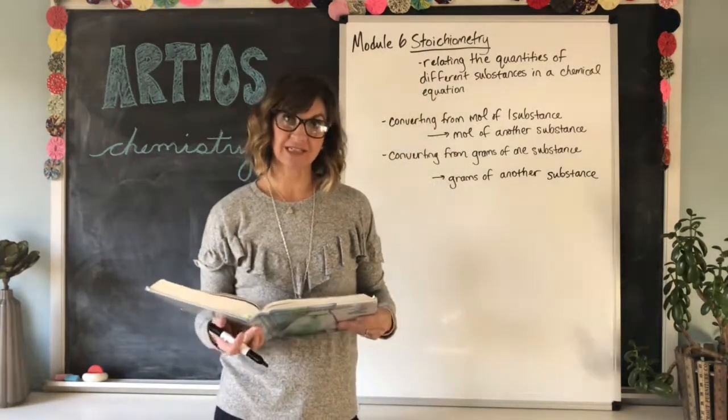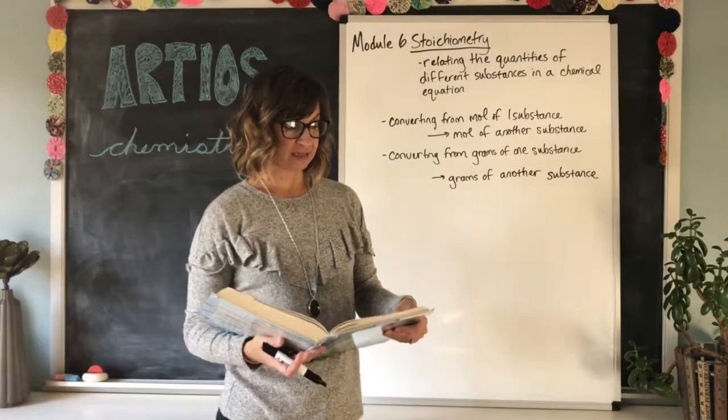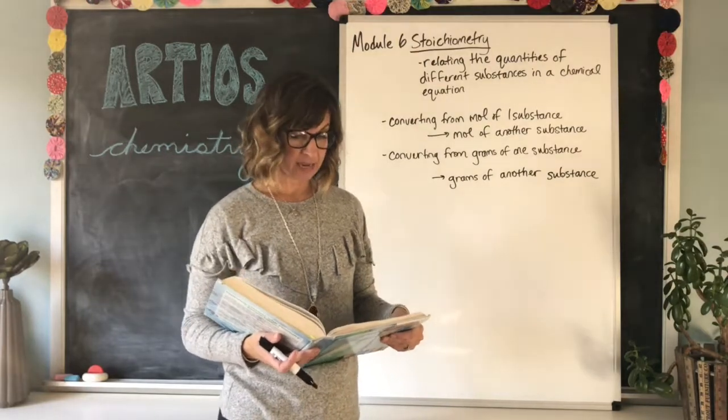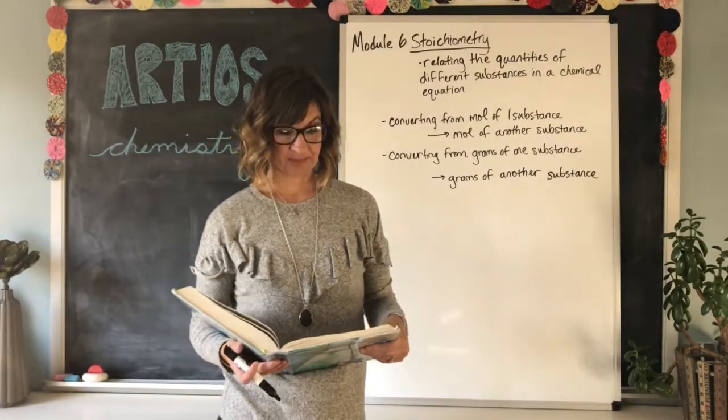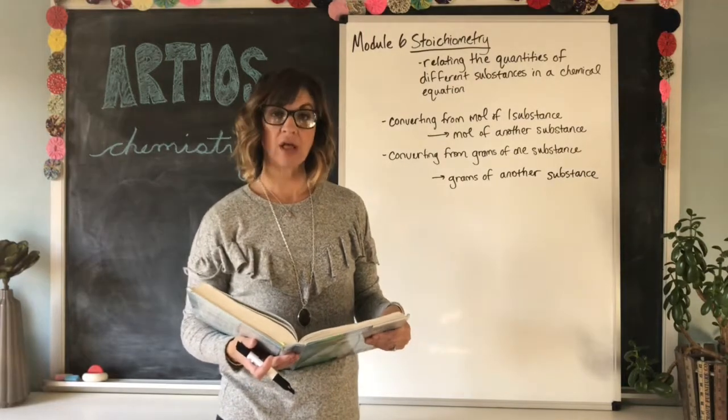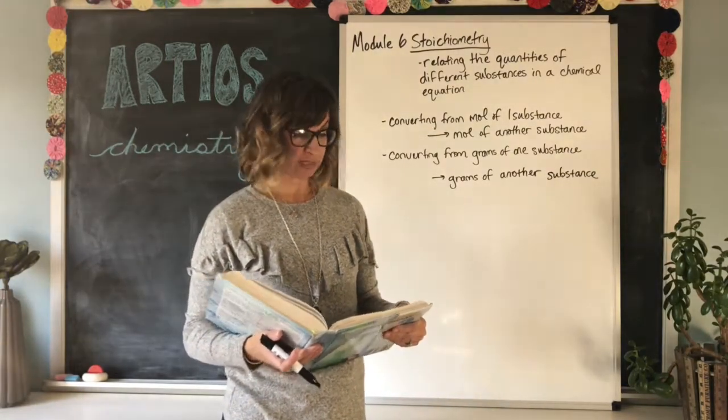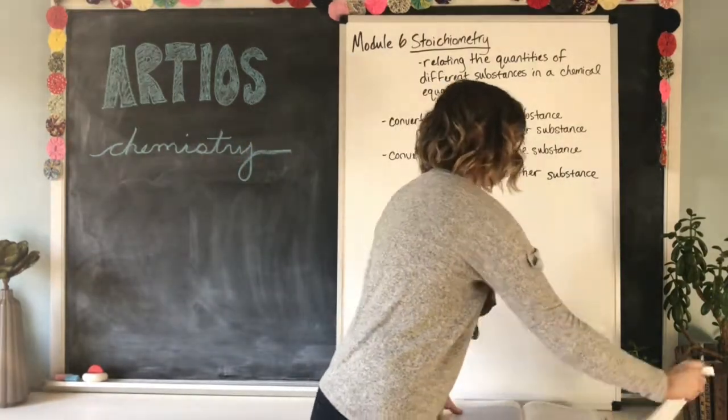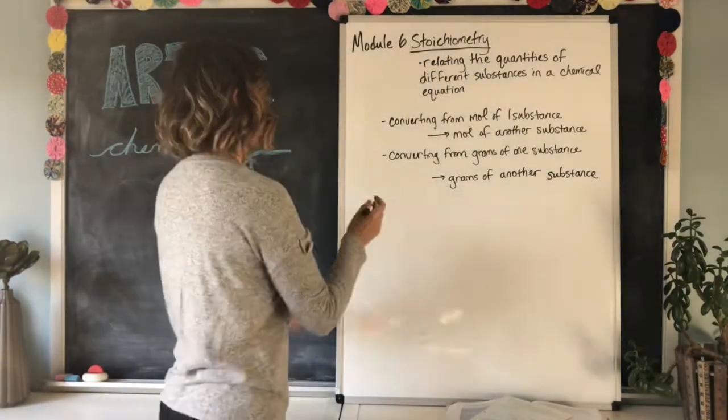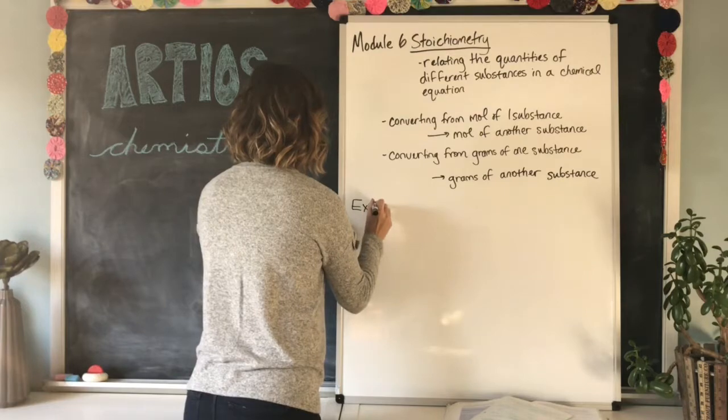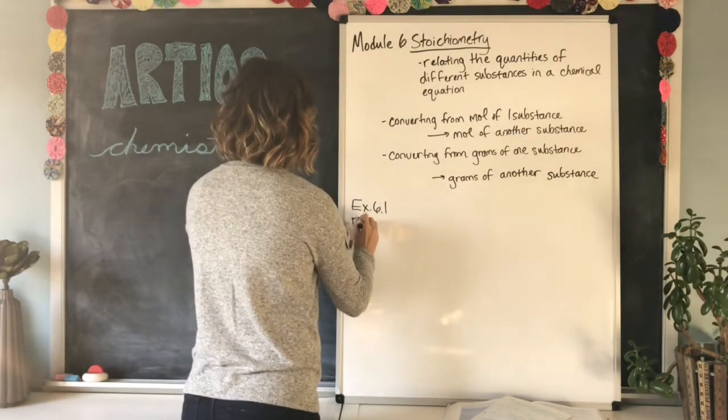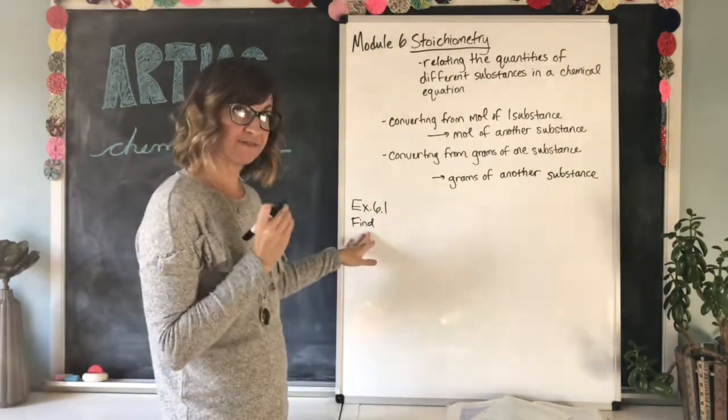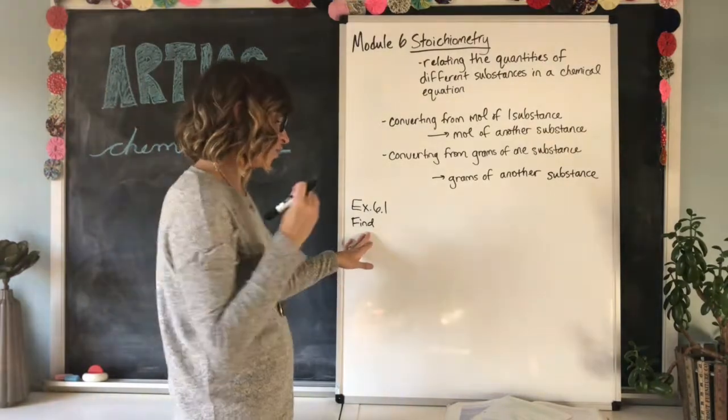This is on page 164. Example 6.1 says a chemist forms ammonium sulfate, an excellent fertilizer, by combining ammonia and sulfuric acid. If the chemist ends up making 12.2 moles of aluminum sulfate, how many moles of ammonia were used? So let's pause and think about what we're looking for. I think I'm going to start organizing them by when we read a problem, we need to think about what we're trying to find and the information that we know.